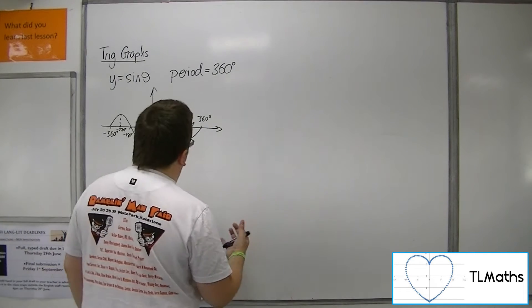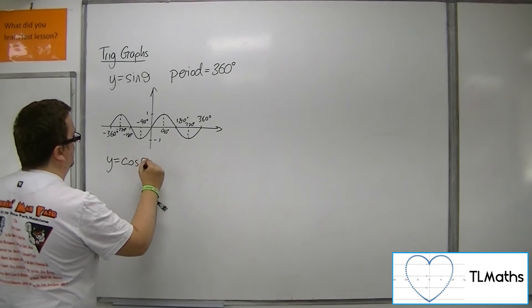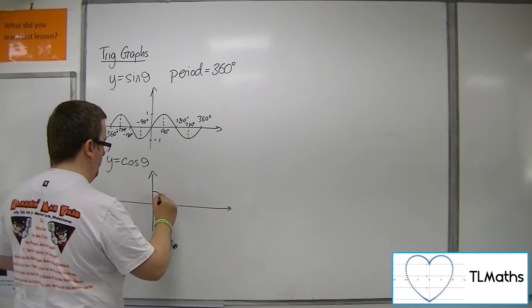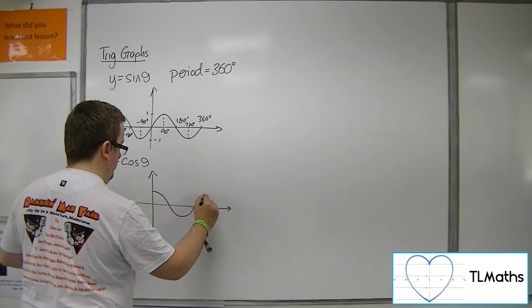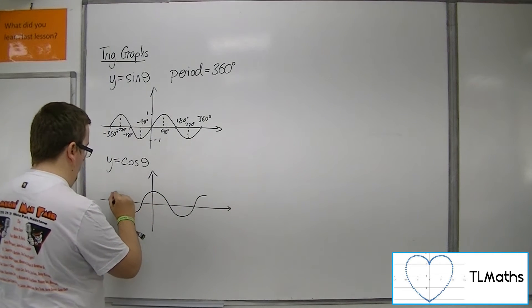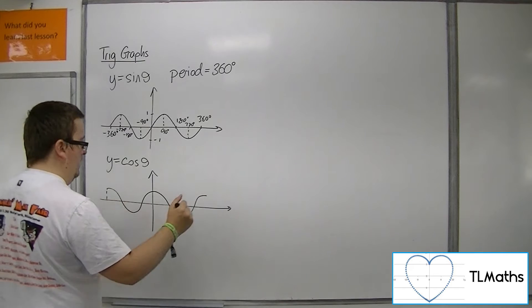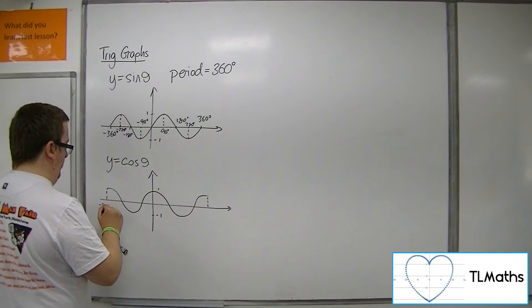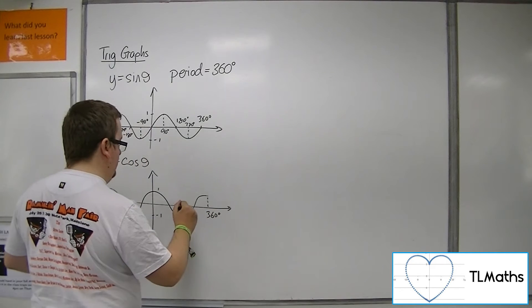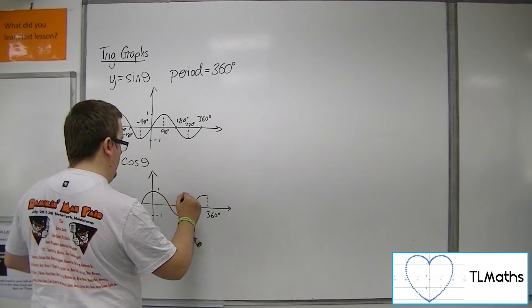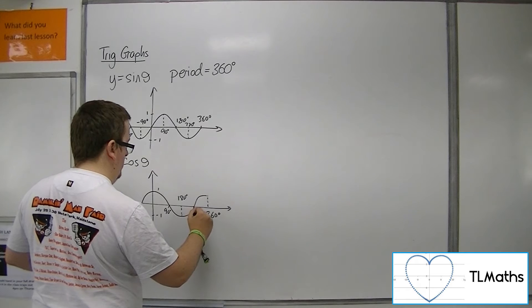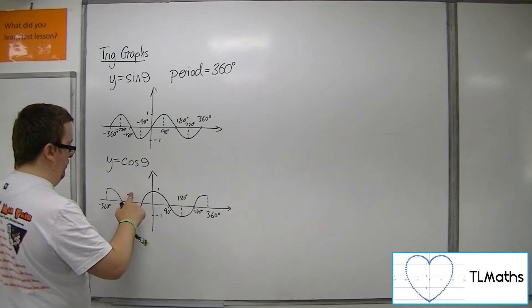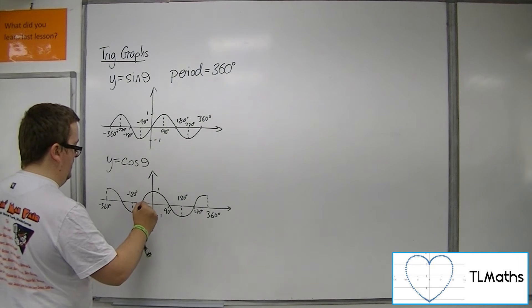Now for cosine, let's draw the curve. There's 1, minus 1, minus 360, 360, 180, 90, 270, minus 180, and minus 90.